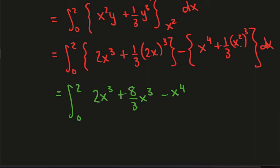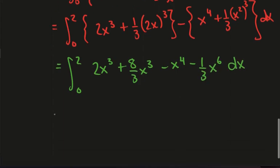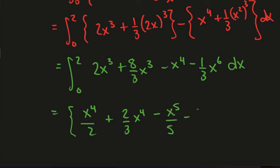And I can simplify the fraction here, but I'm not too worried. So what we end up with is x to the 4 over 2 plus 2 on 3 x to the 4 minus x to the 5 over 5 minus 1 on 21 x to the 7. And this is between 0 and 2.